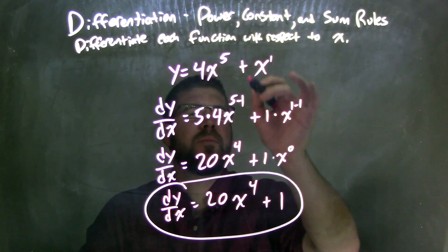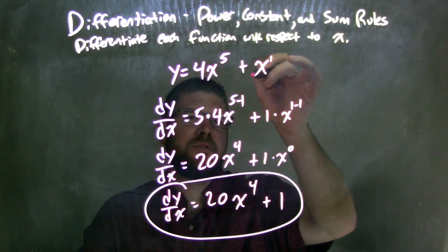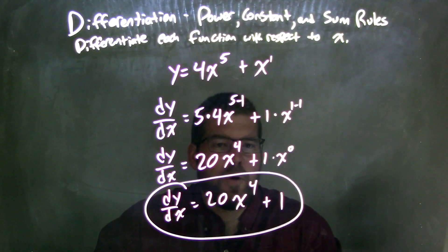And then, most people, if it's just x, the number that's in front of x there, which is 1, is just going to be the derivative there.